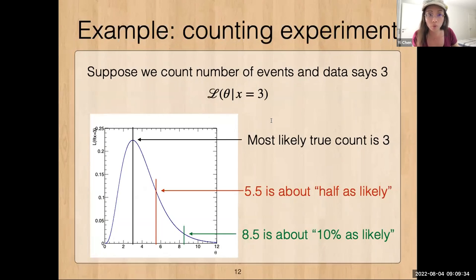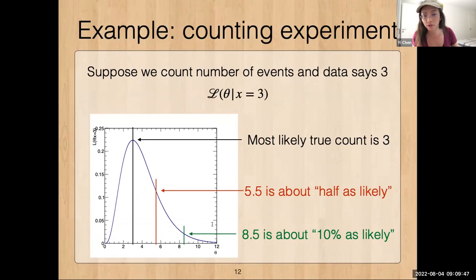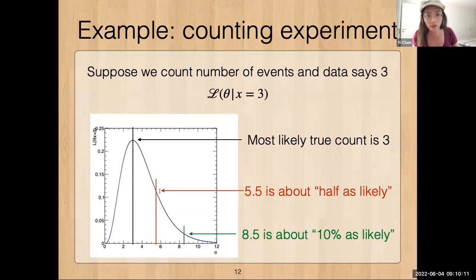As an example: in a counting experiment where we observe three counts, the likelihood function could look like a Poisson distribution. The x-axis is the true rate, and from this function we can say the most likely value is three if we observe three. Then 5.5 is quote-unquote half as likely — just because of a factor of two — and 8.5 is quote-unquote 10 percent as likely, in layman's terms.